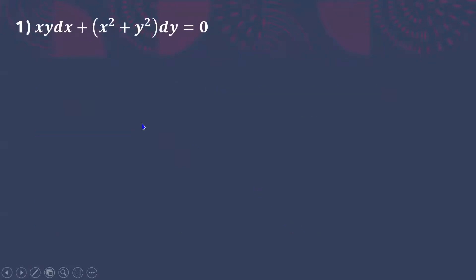Now let's look at example number one, which is an example of a homogeneous differential equation. For N, the degree is two. For M, the degree of x is one and the degree of y is one, so the total degree of M is also two. This confirms it is a homogeneous differential equation. Taking a look at M and N, we can see that M is much simpler than N.